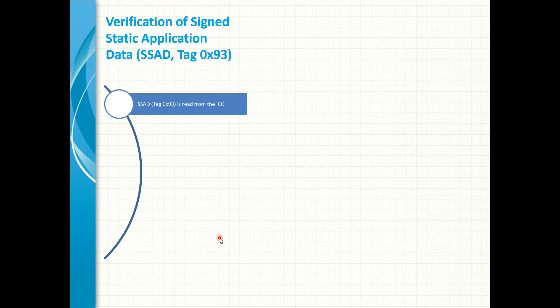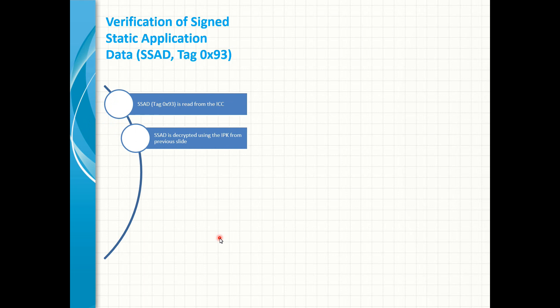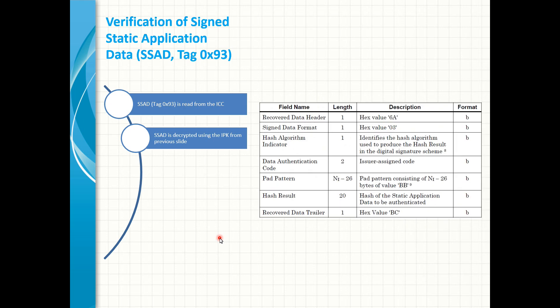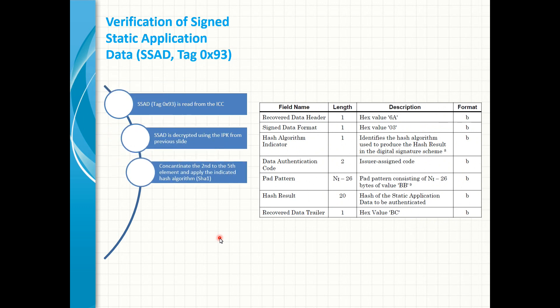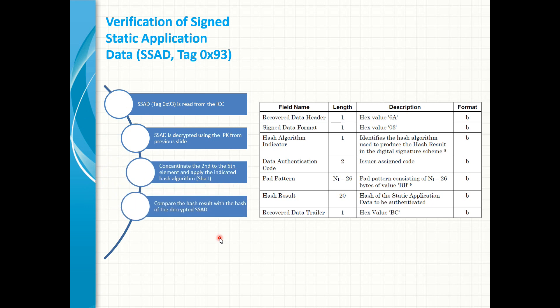The signed static application data is read from the card with the tag 93 hex. It is also decrypted using RSA and the issuer public key modulus retrieved from the previous step. The structure of the recovered data is shown on the table. The concatenation is done from the second element to the fifth. The concatenated data is encrypted with the indicator hash algorithm, which is mostly SHA-1. Both hashes are compared and if they are equal, then static data authentication was successful.